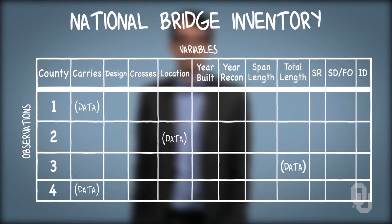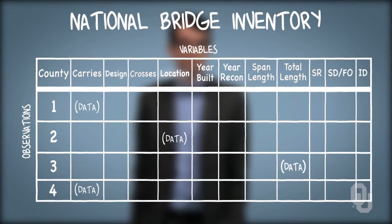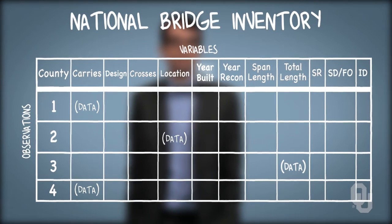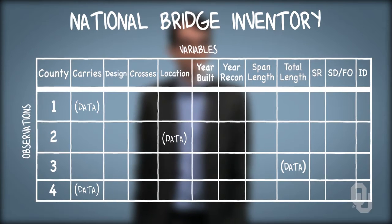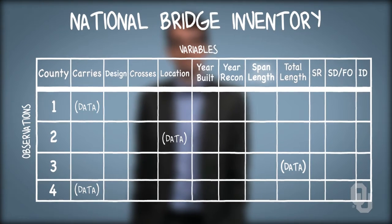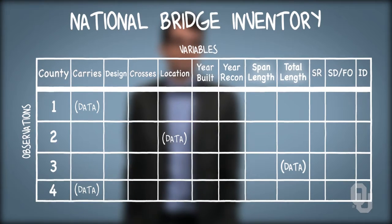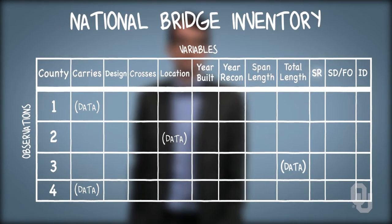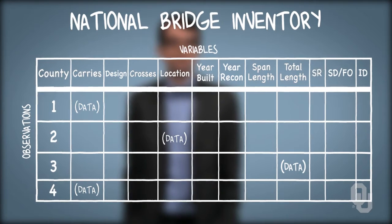Some variables include a bridge identification number, the county where the bridge is located, the street or highway the bridge carries, the object that the bridge is crossing like a creek or highway, and its location — all qualitative variables. The year the bridge was built should likely be viewed as a quantitative continuous variable, as discrete variables are usually counts and years are not really counts. The span length and total length are both quantitative and continuous. The sufficiency rating is a mathematical construct on a 0-to-100 percentage scale accounting for several factors describing the soundness of the bridge — also a continuous quantitative variable.